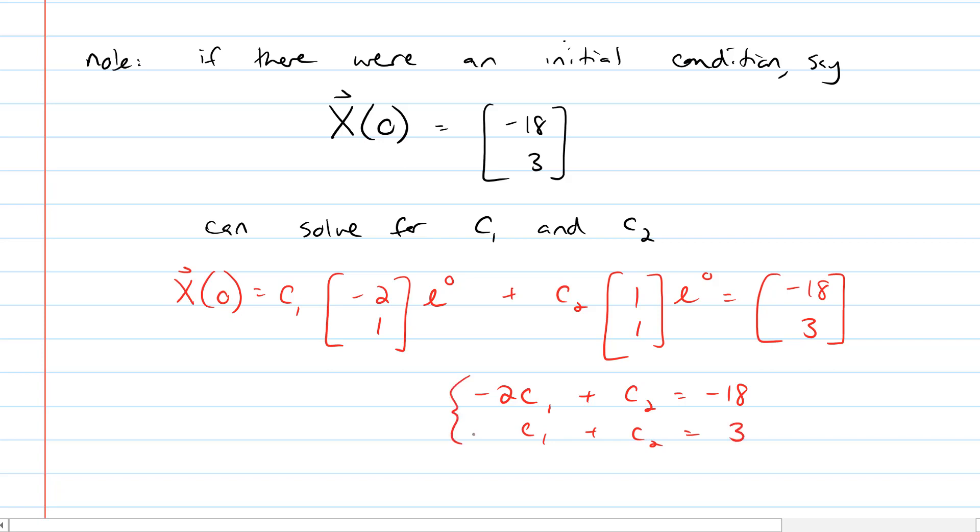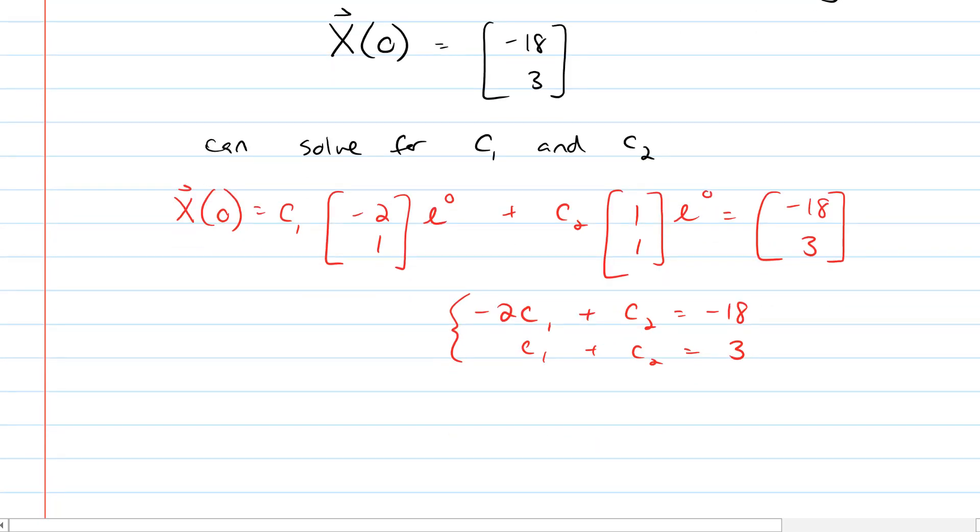That's just a nice little 2 by 2 system here. And if you just mentally multiply the second row by negative 1 and then add it to the top, the c2s are going to cancel and you get negative 3c1 equals negative 21. And with solution, if negative 3c1 equals negative 21, then c1 has to be 7. And since c1 plus c2 equals 3, that means that c2 equals negative 4.